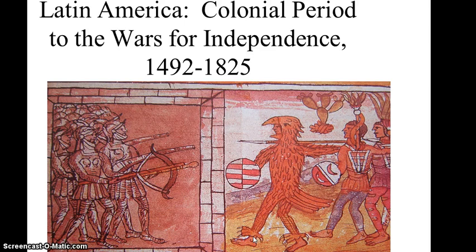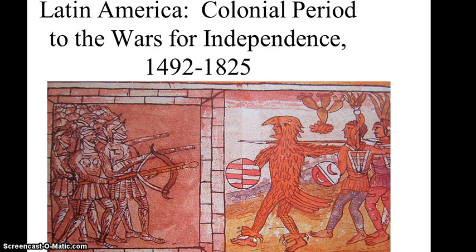Here we can see the Spanish conquistadors on the left and the Aztec warriors on the right. Going back to our discussions of modernity, the Aztec artist who painted this really sees the Spanish as being the representatives of modernity — they have what were at the time modern weapons and armor. On the right, the Aztecs are in more traditional surroundings, surrounded by nature, and have taken on the costume of birds and other animals of prey that they would dress in for their fight against their enemies.